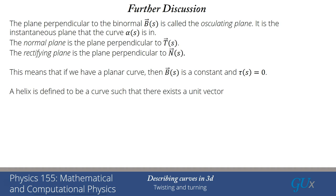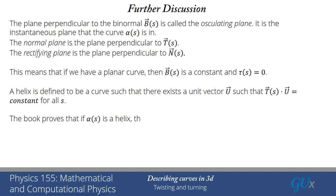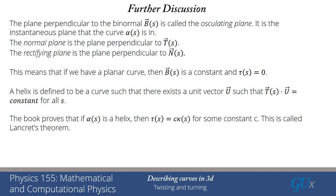A helix is defined as a curve such that there exists a unit vector u where T · u equals a constant for all s. If that is true, the curve is called a helix. The book proves that if alpha(s) is a helix, using the definition that T(s) · u equals a constant, then the torsion is proportional to kappa(s) with some constant c. For our helix, the curvature was R over (R²+H²) and the torsion was H over (R²+H²), so c equals H/R. This proportional relationship between torsion and curvature for a helix is called Lancret's theorem.